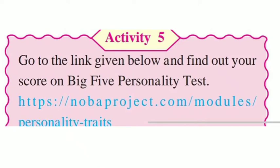Hello students, today we are going to talk about Activity 5, which is related to your last video of Big 5 personality traits. This is the link provided in your textbook — novaproject.com/modules/personality-traits. Once you put this link, there will be various descriptions about all the 5 factors, and at the end of this link there is a test which will show which particular factor you are high or low in.